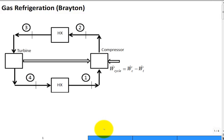I'd like to talk now about gas refrigeration, or the Brayton cycle run in reverse. So this is just like the Brayton, but instead of power production, it's power consumption for refrigeration.